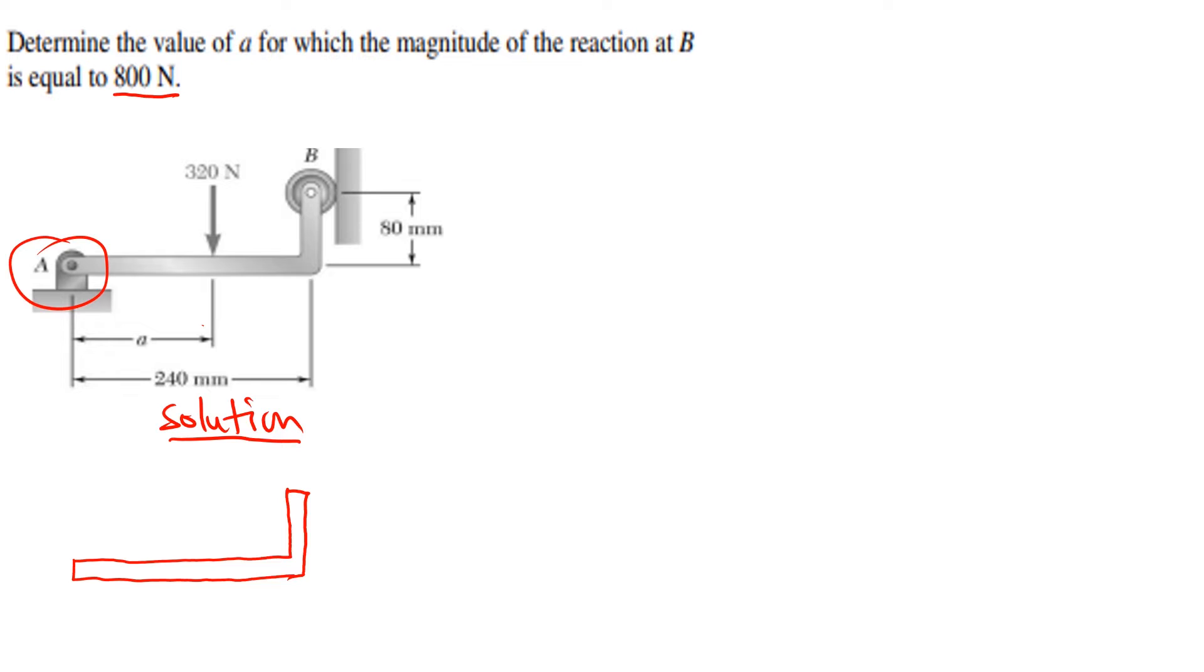Now we can see that we have a vertical force here, which is giving us 320 newtons. Since at the A, we have a pin, we are going to have two reactions: the horizontal, which is A in the X direction, and the vertical part, which is A in the Y direction. We also have the roller, which is going to give us a horizontal reaction at B, but let's take note B is 800 newtons.